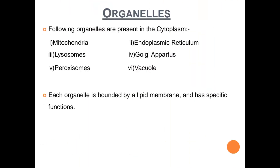Next, let us discuss about cell organelles. The following organelles are present in the cytoplasm: first, mitochondria; second, endoplasmic reticulum; third, lysosomes; fourth, Golgi apparatus; fifth, peroxisomes; and sixth, vacuoles. Each organelle is bounded by a lipid membrane and has specific functions.